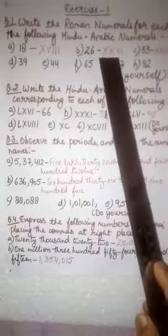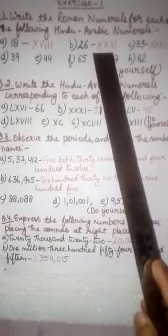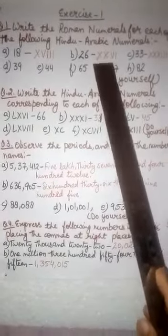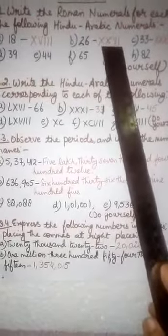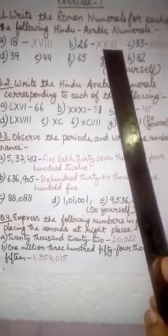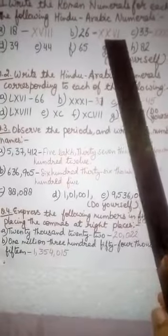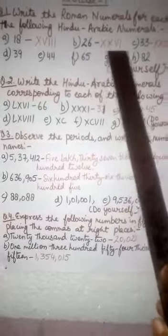X which is 10, V 5 and 3 I means 10 plus 5 plus 3 is 18. For 26 to write we can write 2 Xs which is 20, V 5 and 1, which means 20 plus 6 is 26.